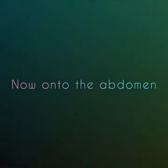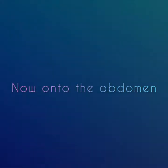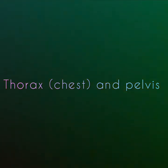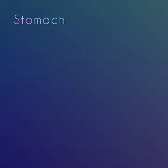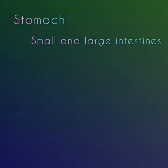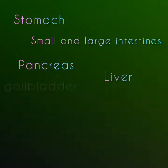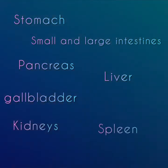Now onto the topic of the abdomen. The abdomen is the body space between the thorax and the pelvis. The diaphragm forms the upper surface of the abdomen. The abdomen contains all the digestive organs, including the stomach, small and large intestines, pancreas, liver, and gallbladder. The abdomen also contains the kidneys and spleen.